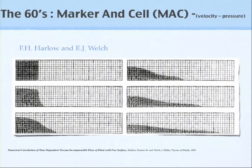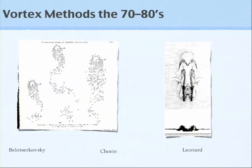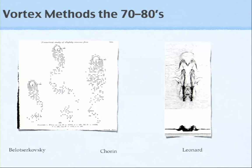Some of the first particle simulations were done by Harlow and Ross. Moving to the area of vortex methods, people looked into velocity-vorticity formulations. You want to do vorticity because when you look at the wake of bodies, vorticity is confined — therefore you get an extremely efficient discretization of your field if you are following vorticity. This work was done in Russia and the U.S., using vortex elements to model boundary layers.